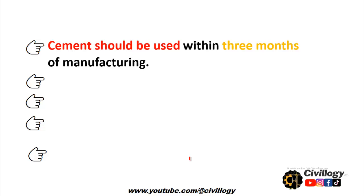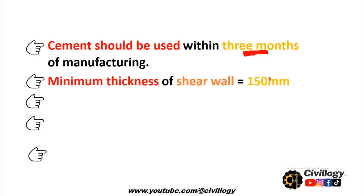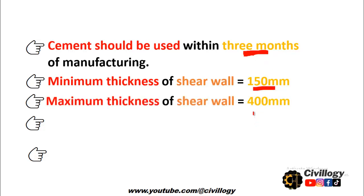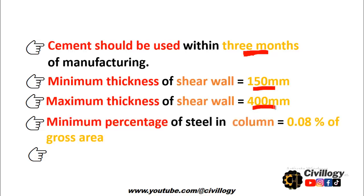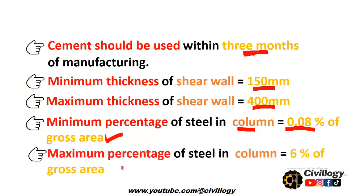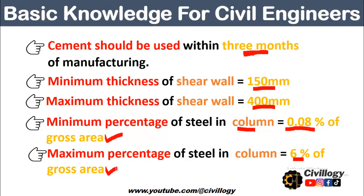Cement should be used within three months of manufacturing, so the manufacturing date is very important for site engineers. The minimum thickness of a shear wall is equal to 150 millimeters and the maximum thickness of a shear wall is equal to 400 millimeters. The minimum percentage of steel in columns is equal to 0.8 percent of the gross area of the concrete, and the maximum percentage of steel in columns is 6 percent of the gross area.